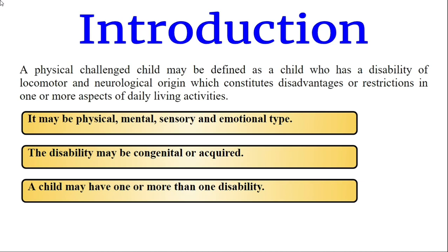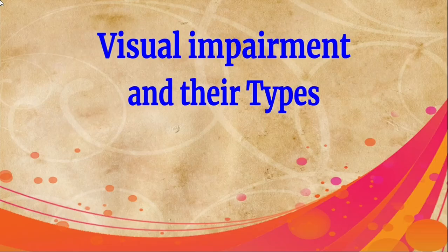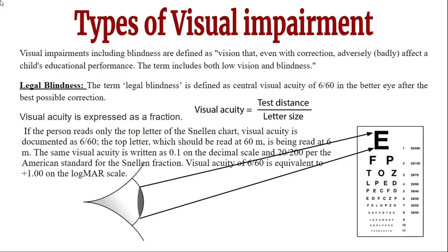A child with physical disability may have one or more disabilities. Visual impairment, including blindness, is defined as vision that even with correction adversely affects a child's educational performance. This term includes both low vision and blindness.